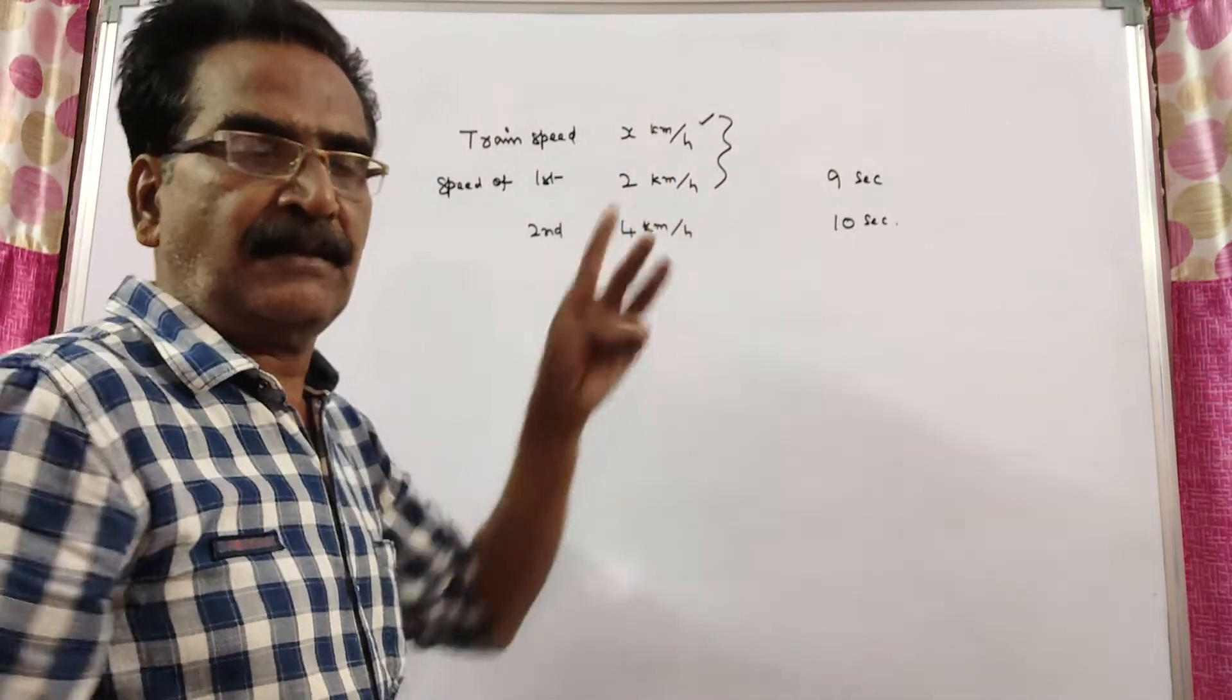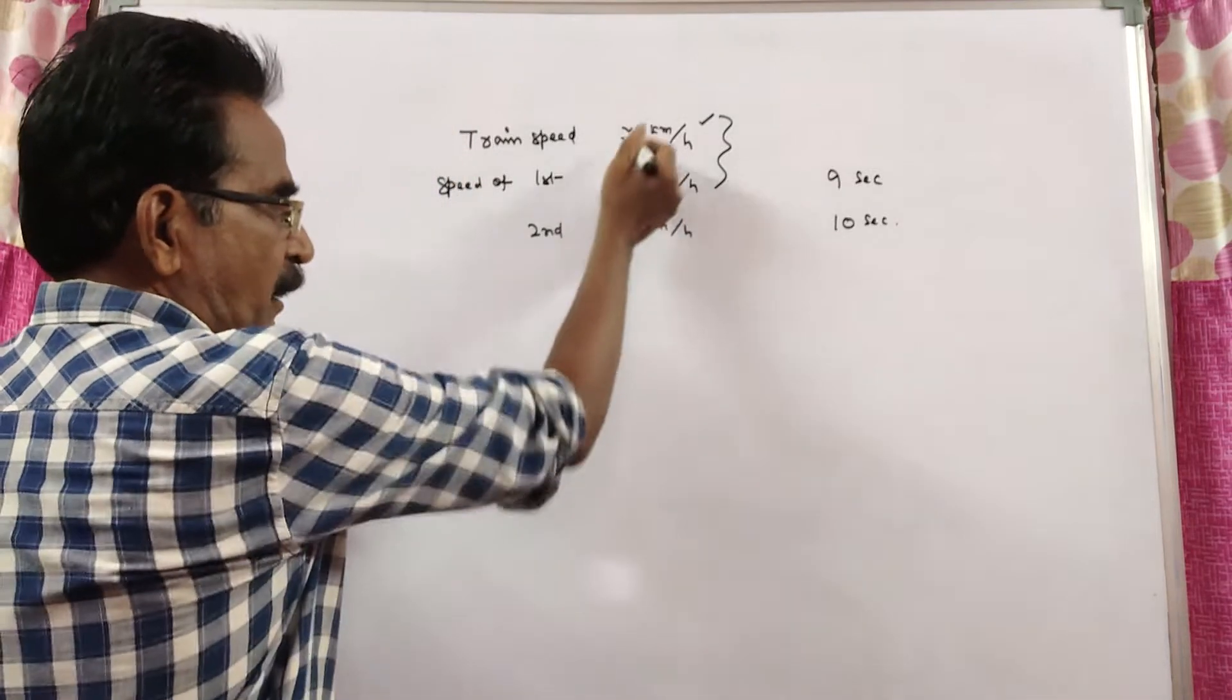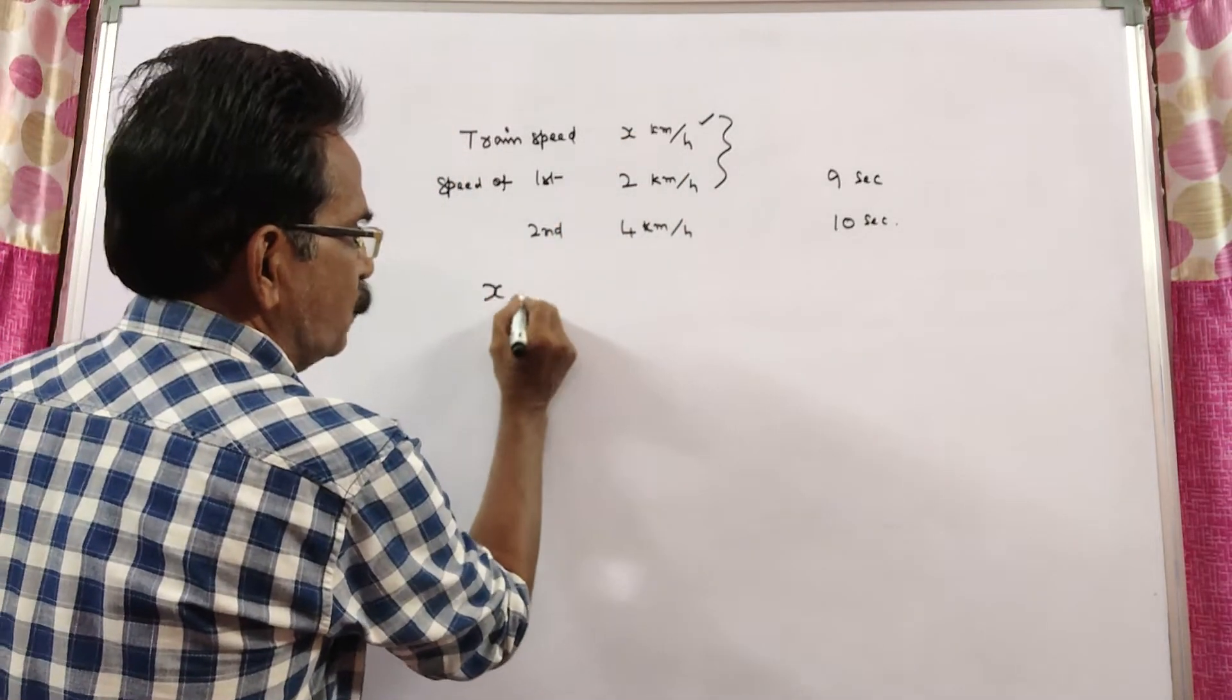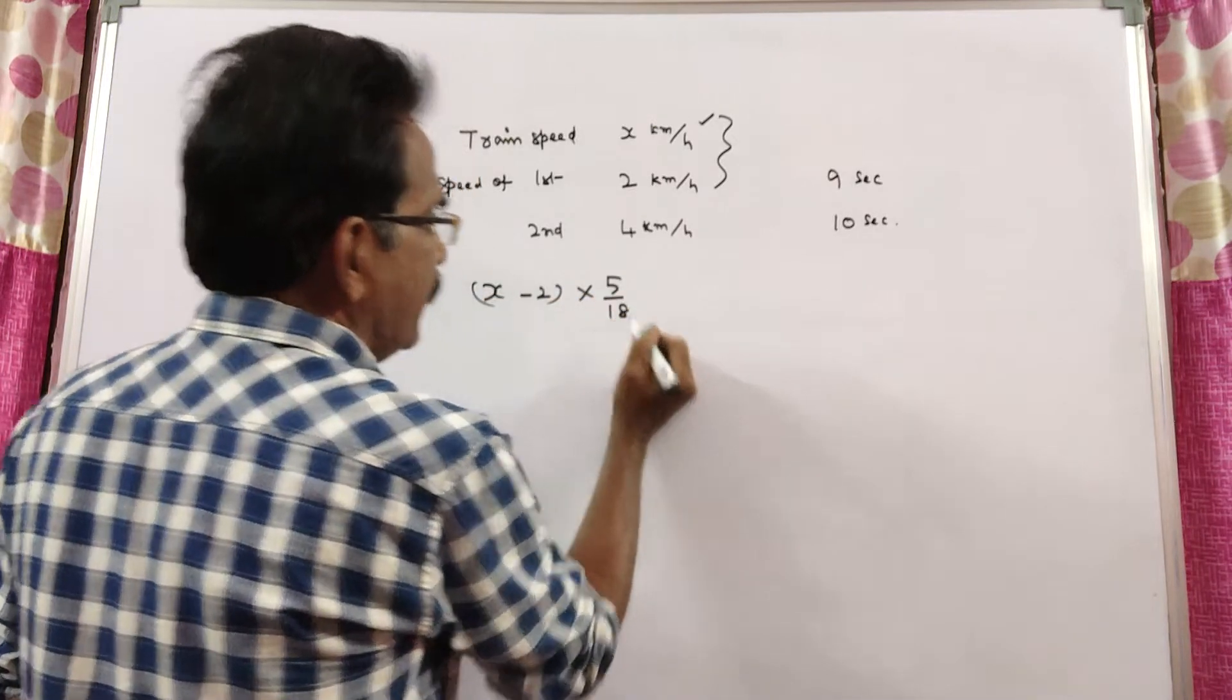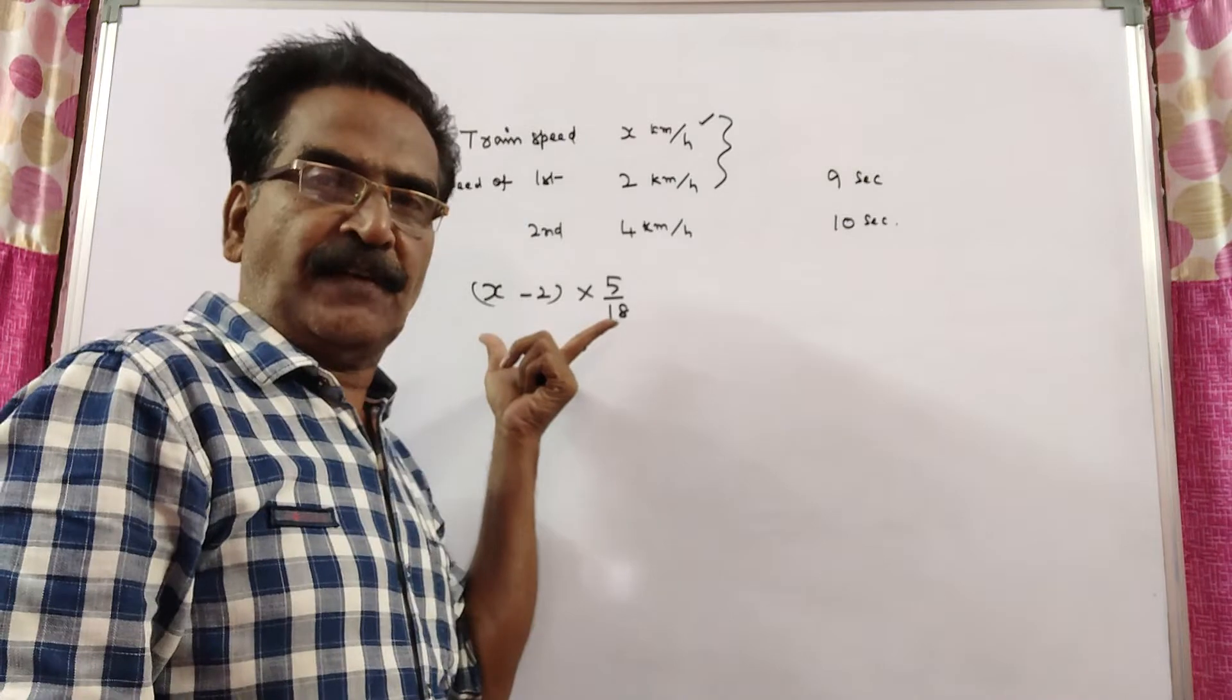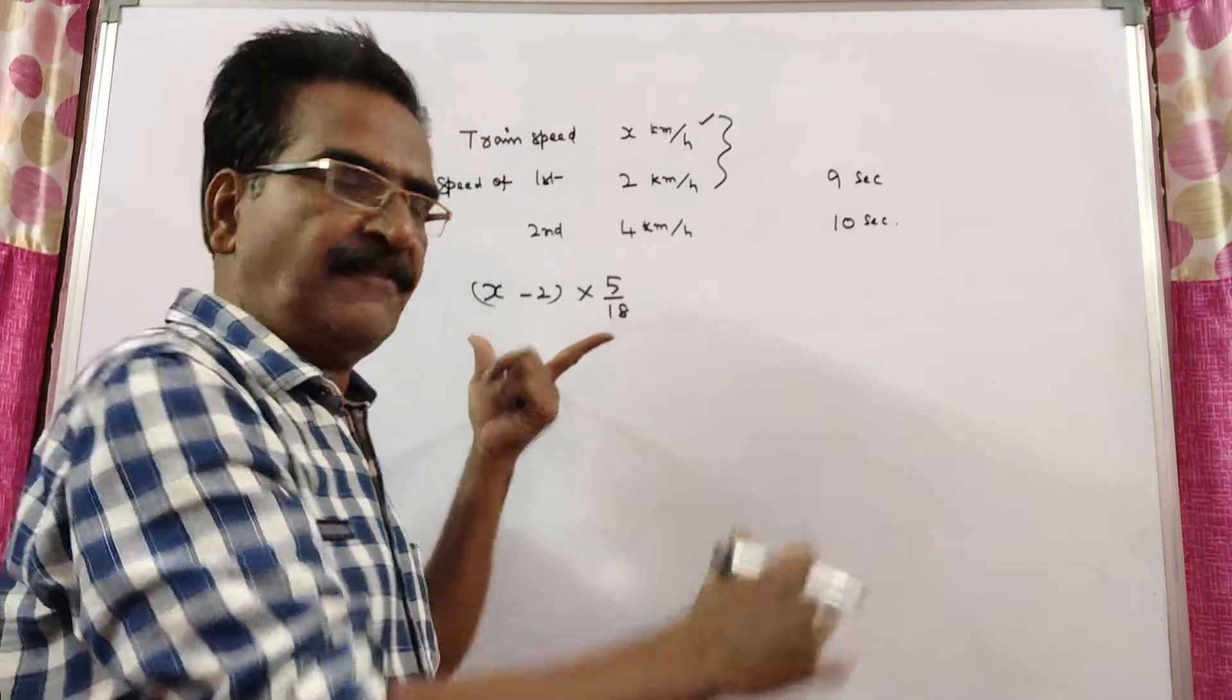the relative speed, relative velocity is x-2 kmph, x-2 kmph and then into 5 by 18. This is the relative velocity when crossing the first man.